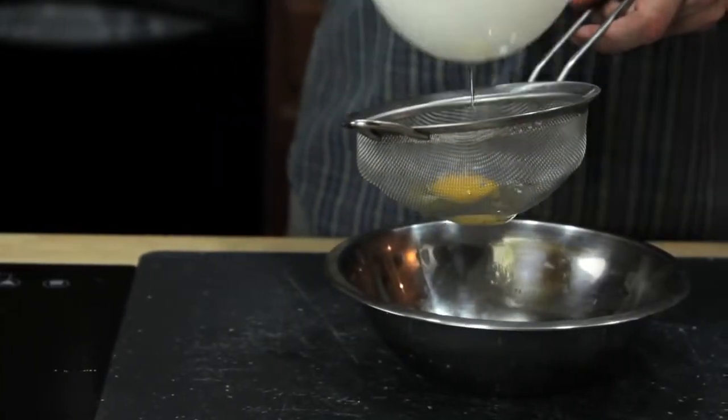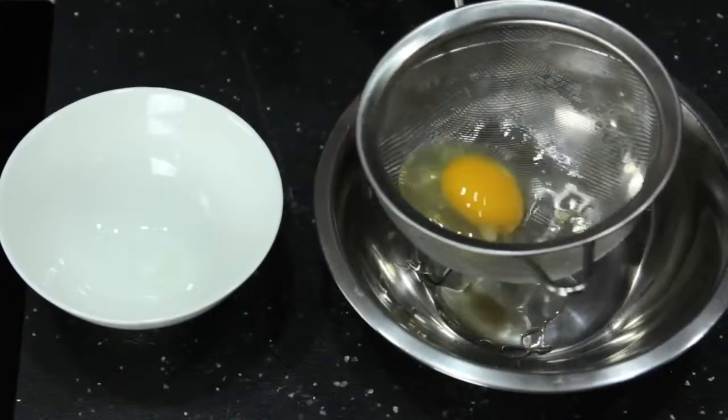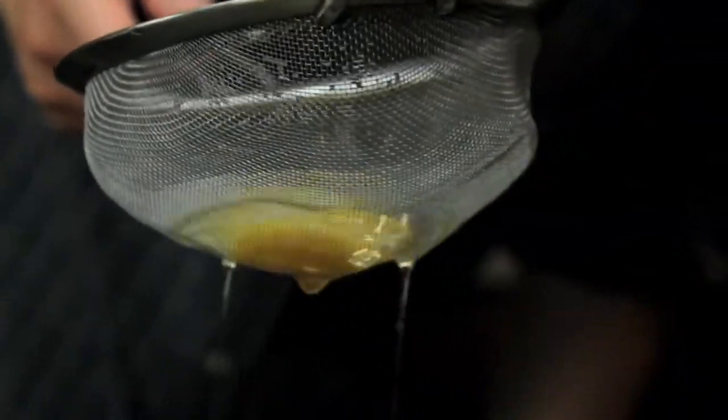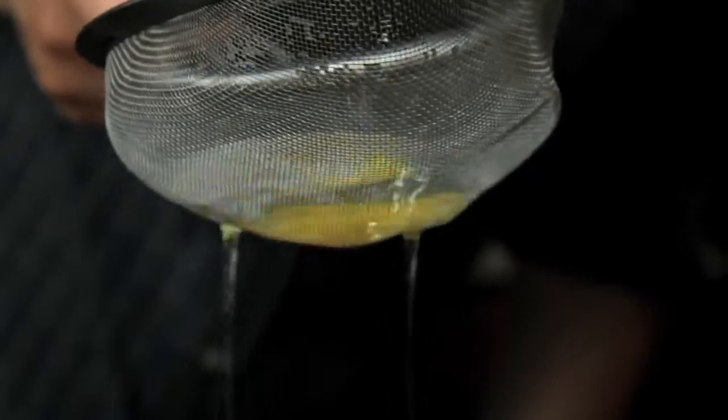To get rid of them, we're going to transfer our eggs to a fine mesh strainer and gently swirl it around until all the excess white is drained away. What you're left with is a nice, tight egg.